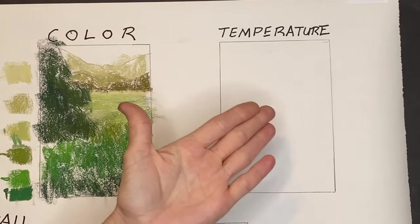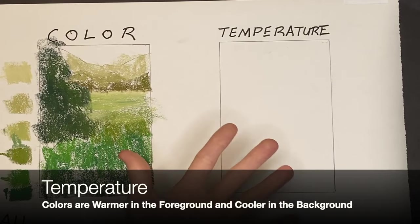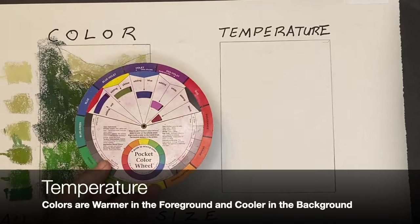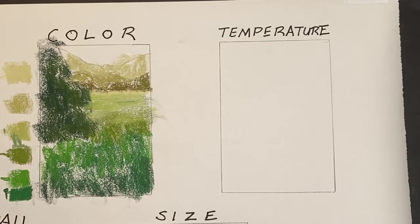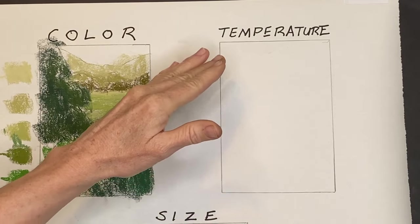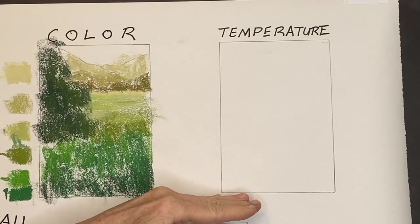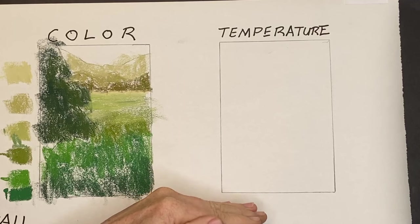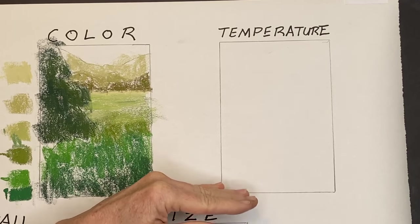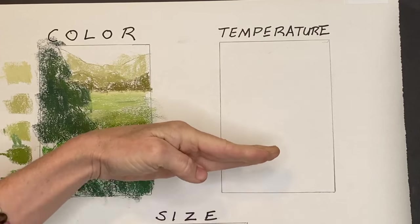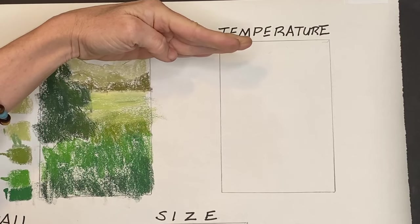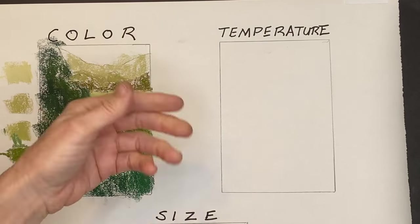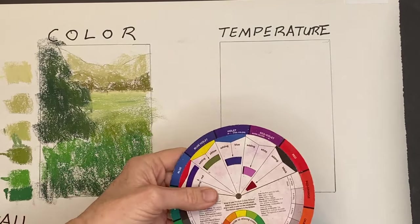Now what do I mean by temperature? I'm speaking of color temperature. Going back to the pocket color wheel — with regards to temperature, think of the words fire and ice, warm versus cool colors. The rule with color temperature is that elements closer to you are typically warmer in color temperature, and things get cooler in color temperature as they recede into the distance.